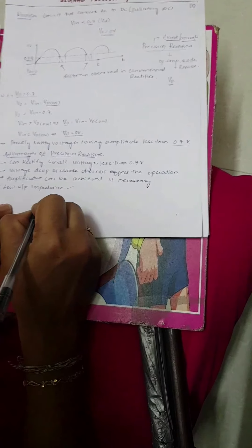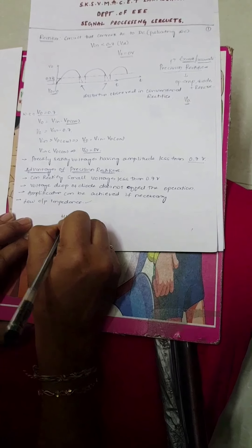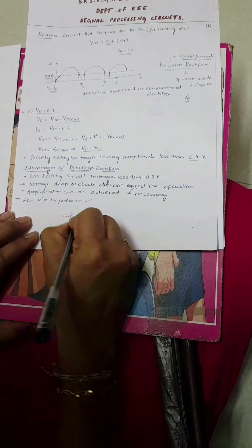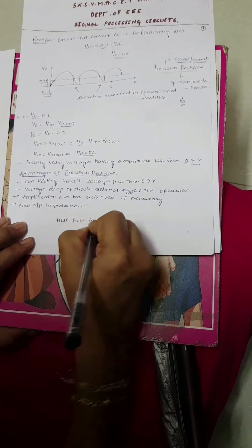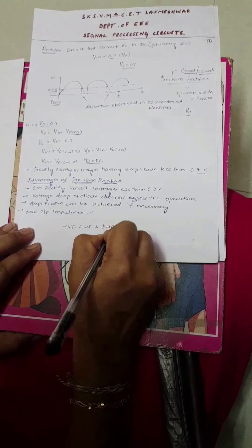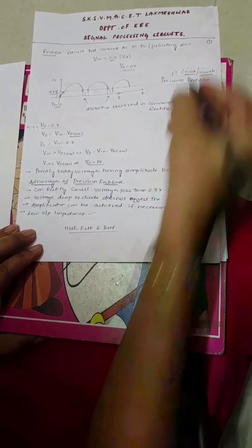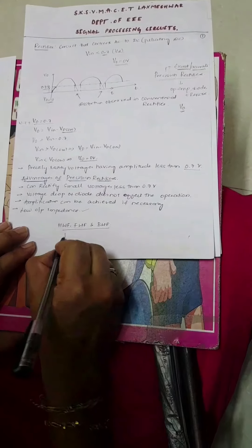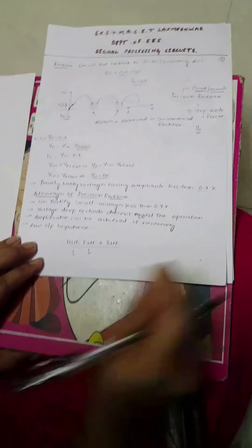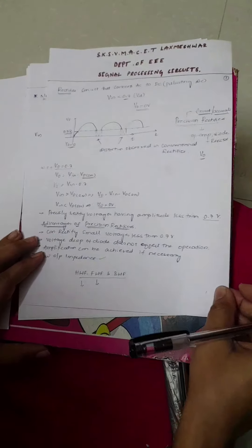In conventional rectifiers we have half wave rectifier, full wave rectifier, and bridge rectifier. Similarly, in precision rectifiers we have half wave precision rectifier as well as full wave precision rectifier. We shall see the circuits one after the other.